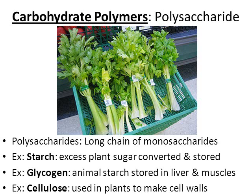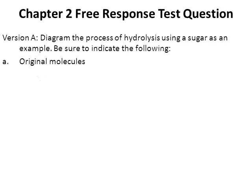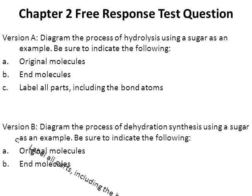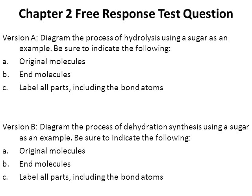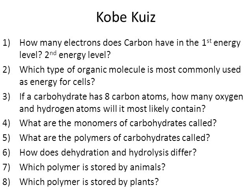For honors biology class, here is the free response essay question for the chapter 2 test. You won't know which version you'll get: half will randomly receive version A and be asked to diagram the process of hydrolysis, and half will get version B and diagram the process of dehydration synthesis. Keep in mind they're really just opposites of one another. You can pause the video and try to answer on a separate sheet of paper — I'd be happy to check them before or after school for accuracy.